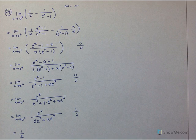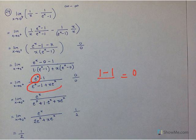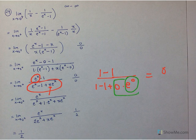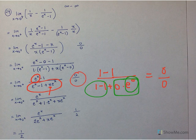Now try direct substitution again with the simplified expression. Substituting x = 0 in the numerator: e^0 - 1 = 0. In the denominator: (e^0 - 1) + 0·e^0 = (1 - 1) + 0 = 0. So we get 0/0 again — still an indeterminate form for which L'Hôpital's Rule can be used.